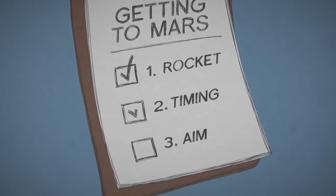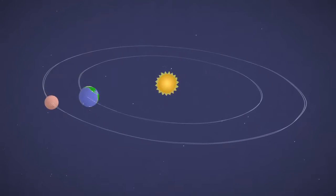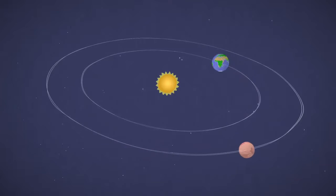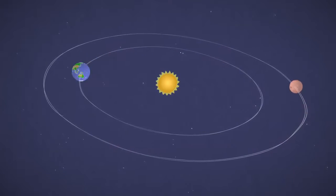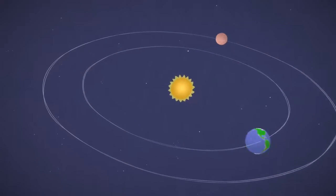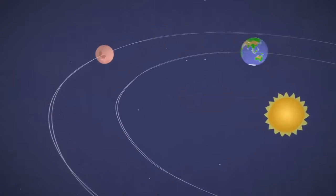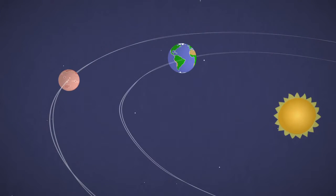Next, make sure you launch at the right time. Mars and Earth orbit the Sun at different speeds and distances. Sometimes they're really far apart, and other times they come closer together. About every two years, the two planets are in perfect positions to get to Mars with the least amount of rocket fuel. That's important.